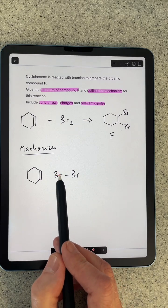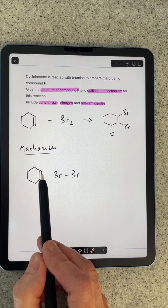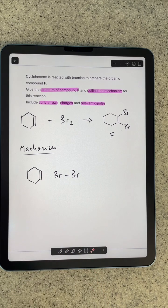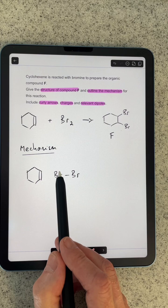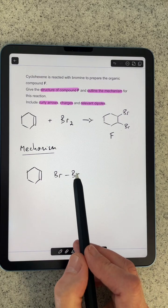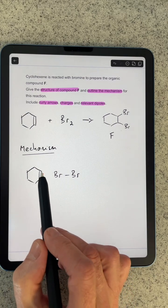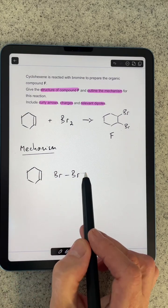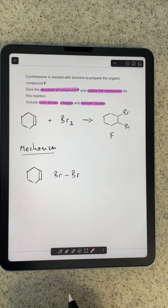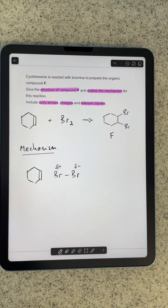This bromine here, because it's closest to the high electron density of the double bond, is going to be slightly positive. This one is going to be slightly negative because the electron density here is repelling the electron density in the bromine molecule. There's the dipole on now.